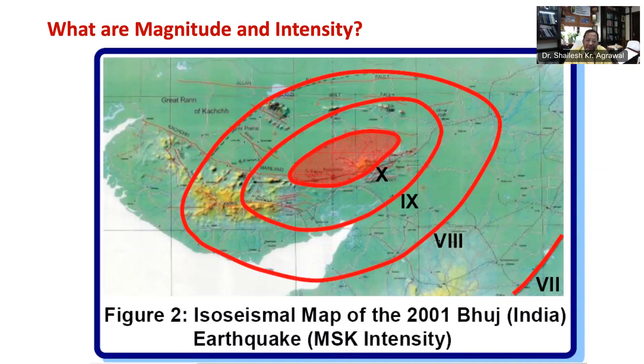So whether the intensity is 8, 9, 10, 11, or 12, buildings are normally designed for that particular level of intensity at their location.